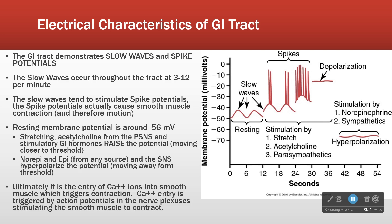Things that tend to hyperpolarize are the opposite — your norepinephrine and your sympathetics. Because when the rest and digest system is active, we digest well. When our fight or flight system is active, we tend to suppress the GI tract — put that blood in other places so you can fight off the mountain lion. The norepinephrine and sympathetics tend to hyperpolarize the membrane.